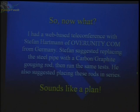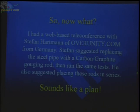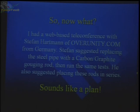So now what? I then had a web-based teleconference with Stefan Hartman of overunity.com. Stefan looked into the Newman motor — Joe Newman motor. He mentioned that Newman used a bank of up to eight carbon rods. Stefan suggested replacing the steel with carbon graphite gouging rods, but keeping the tungsten rod. He also suggested placing these rods in series, just as in the Newman motor, and seeing what happens. So I ran the test.